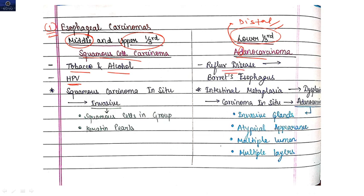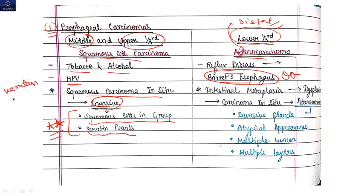In squamous carcinoma, carcinoma in situ will occur that will progress to invasive carcinoma. Two important microscopy findings: squamous cells will be seen in groups and keratin pearls will be seen. So anywhere if squamous cell carcinoma is occurring, you will get keratin pearls on microscopy.